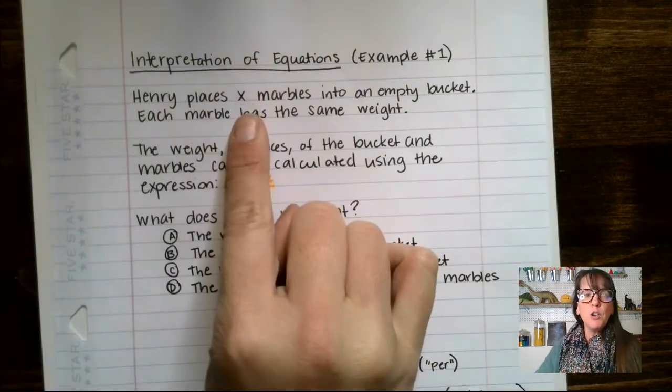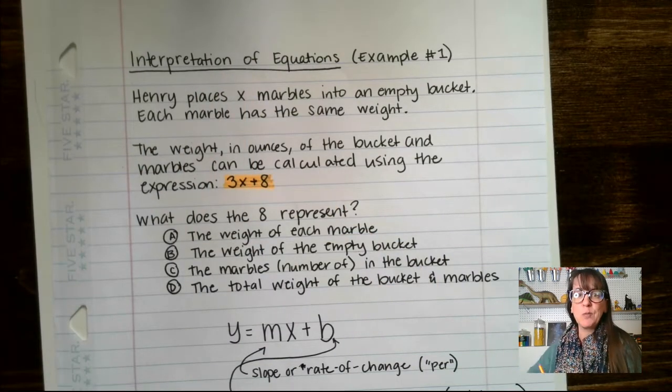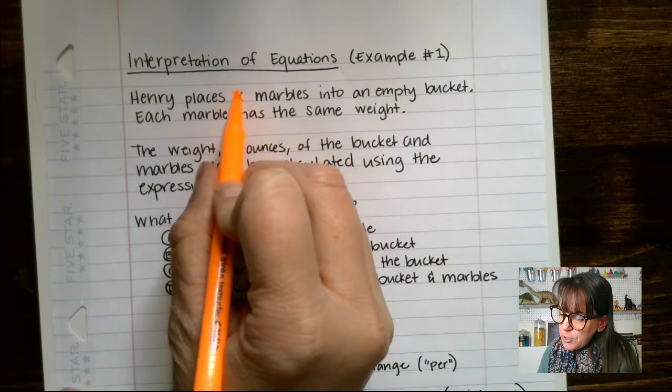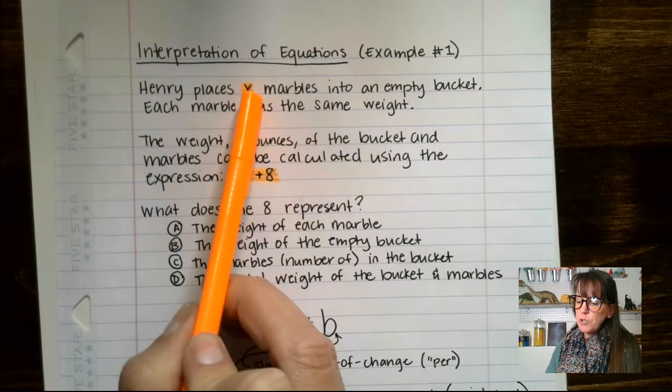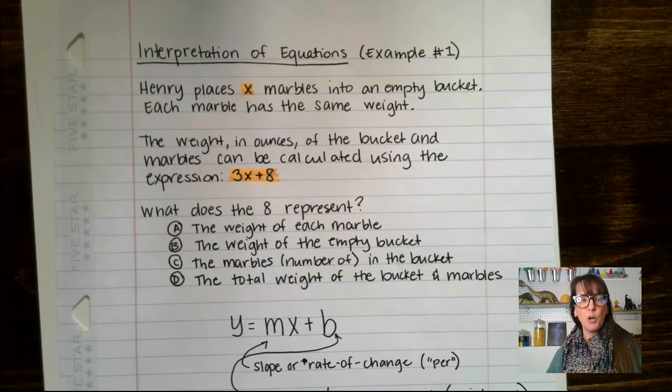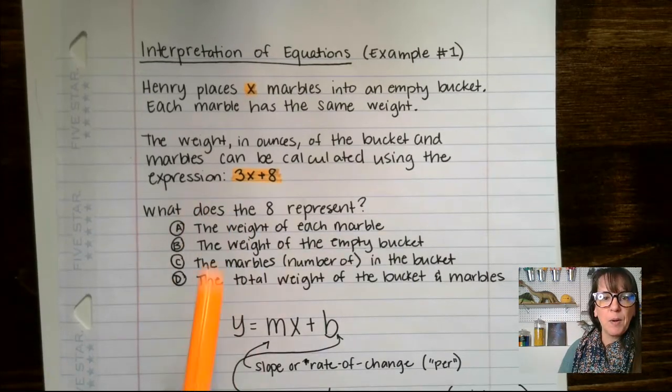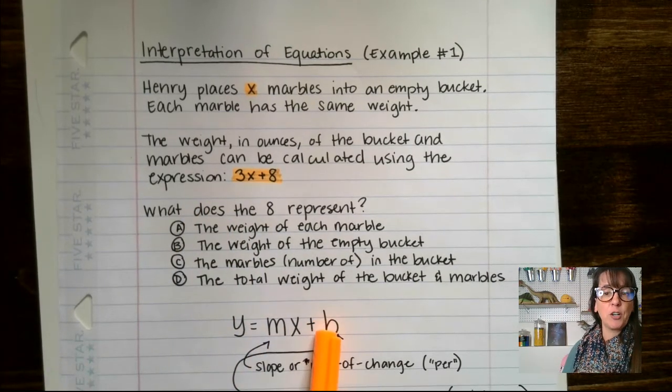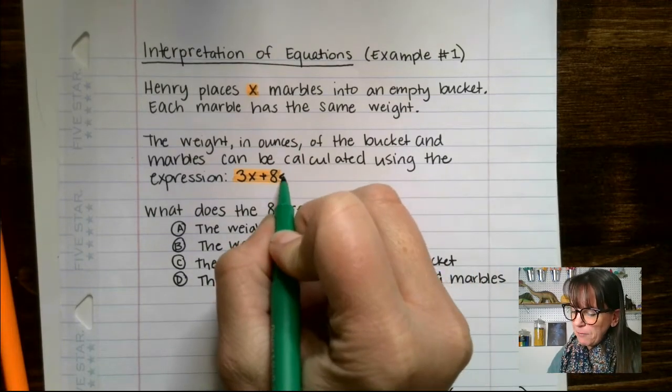What we don't know is that he has x number of marbles. We do know that if he has one marble, we're going to multiply it by the weight. If he has two marbles, we're going to multiply it by the weight to get the total weight. So we look at this and go back to our representation of our slope and our starting or fixed amount.